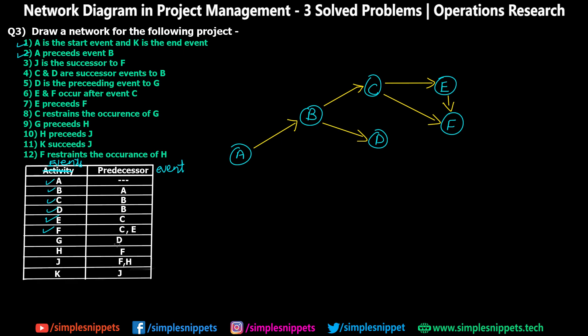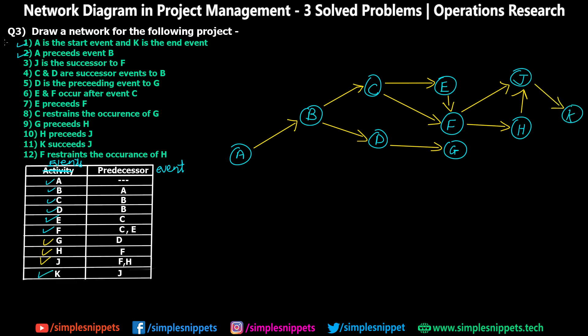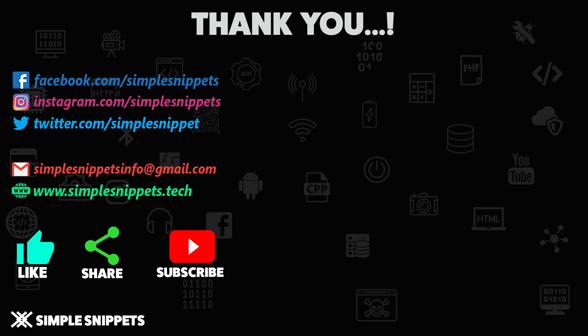G is preceded by D, so D leads to G. H is preceded by F, so after event F an activity results in H. For J, F and H are required — two activities result in event J. Lastly, K requires J, so after J an activity results in K. This concludes the third question and the last type of network diagram question — in the form of events and predecessor events. I hope the three different numericals are very clear. If you liked this video please give it a thumbs up, share it with your friends, and see you in the next video.